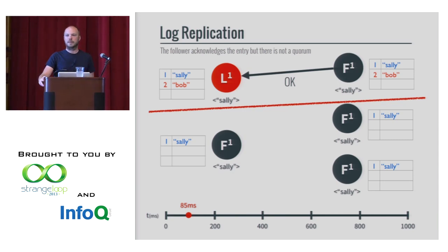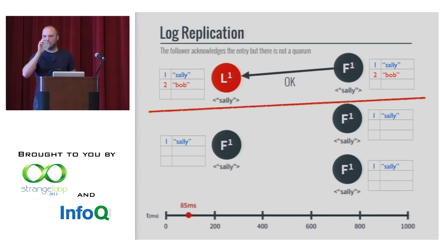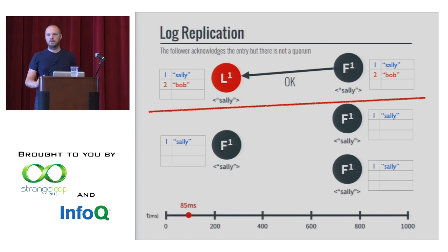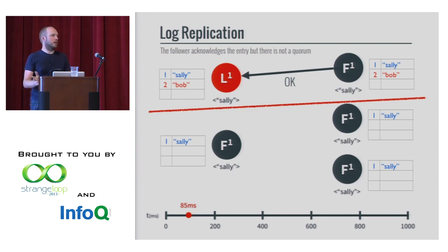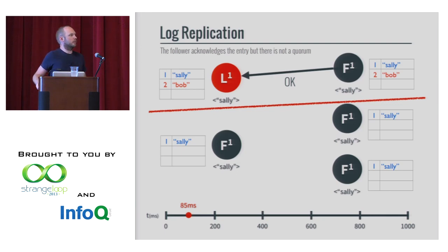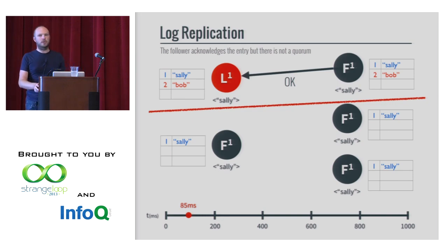Question: can you only commit data to a leader, and can you read from any followers? Yes, you can only write to the leader. You can read from followers, but it really depends on whether you want to support phantom reads. You could see a stale value, so you should read and write through the leader itself if you want to ensure one consistent value at a time. You have replication but your throughput can be limited in that sense.